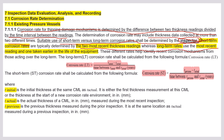Short-term corrosion rates are typically determined from the two most recent thickness readings, whereas long-term rates use the most recent reading and one taken earlier in the life of the equipment. For long-term corrosion rate, t_initial is when the vessel was installed — let's say 2000 — and t_actual is now, say 2022.